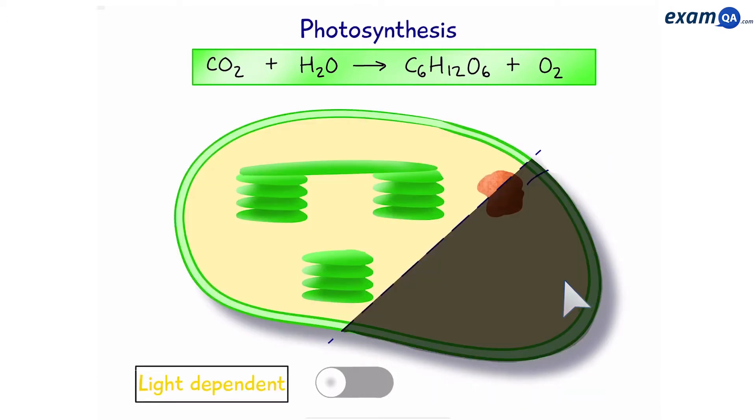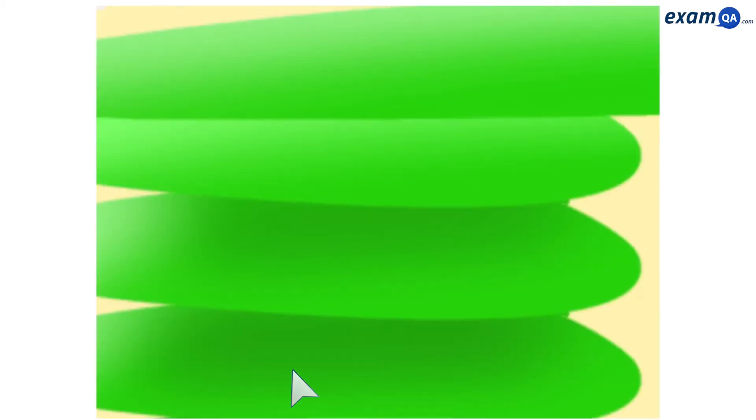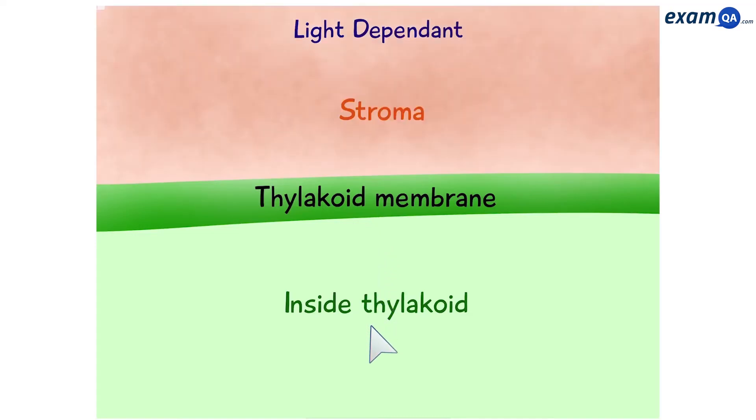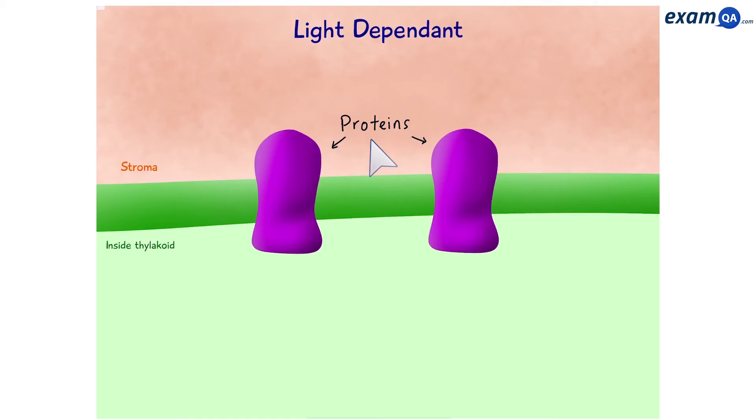In this video, we're going to be focusing on the light-dependent stage. So, let's zoom into here and see what happens. So, this green line is going to represent the thylakoid membrane. Meaning, underneath it is inside the thylakoid and above it is the stroma.